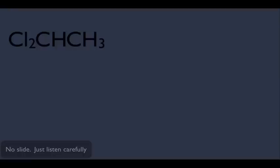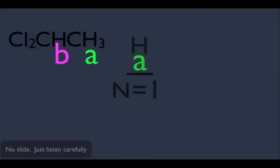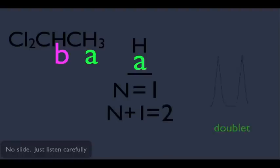Let's start simple. Look at this molecule. Let's label this hydrogen as our A hydrogen and this one as our B hydrogen. If we want to find the splitting for the A hydrogen, his n value equals 1 — there's only one B hydrogen. So using the n plus 1 rule, n plus 1 equals 2, and we should observe a doublet for the A hydrogen.